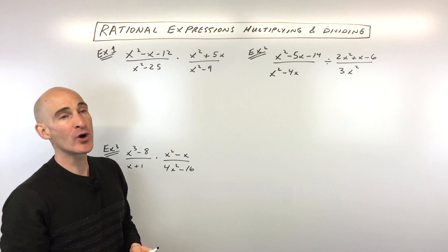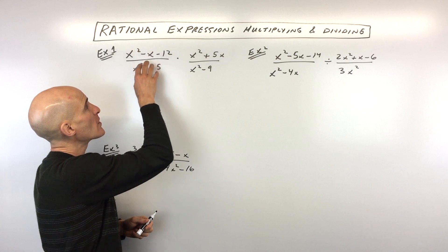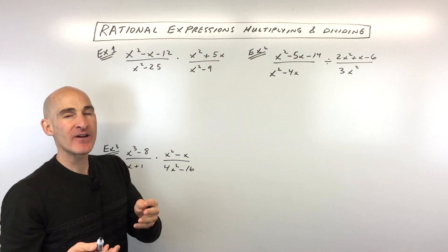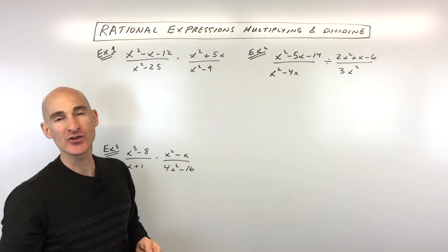But there's another technique you can do where you reduce numerator and denominator, or on the diagonal's numerator and denominator. As long as the factors are the same, you can cancel them out. So I'll show you how this works.